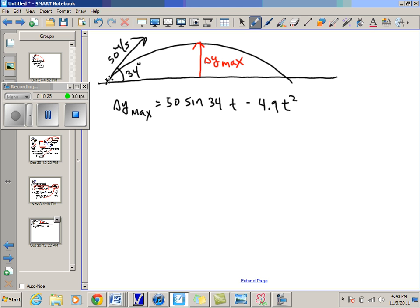Now to find the t value, what I'm going to do is I'm going to remember here that at delta y max, v y equals zero. And I'm going to say v y equals zero, and that's equal to v initial y plus g t. Go ahead and solve this out. I know v initial y is 50 sine 34. So I get t equals 50 sine 34 divided by 9.8. And that gives me a t value of about 2.85 seconds.